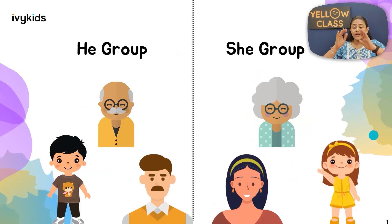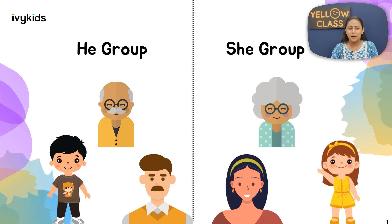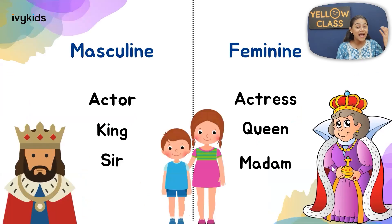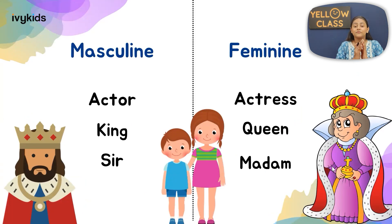All male members come under the 'he' group — so your father, brother, and grandfather are masculine. Your grandmother, mother, and sister are feminine. Now I have a small question: under the topic of masculine and feminine, here are some word pairs — actor is masculine, actress is feminine; king is masculine, queen is feminine. Sir and madam: when you call a female teacher you say madam or ma'am, and when you call a male teacher you say sir. That is the difference.